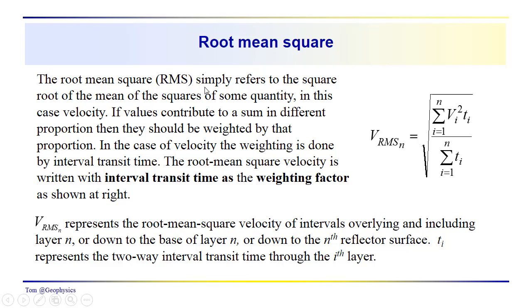The root-mean-square velocity, the RMS, simply refers to the square root of the mean of the squares of some quantity, in this case velocity. If values contribute to a sum in different proportion, then they should be weighted by that proportion.